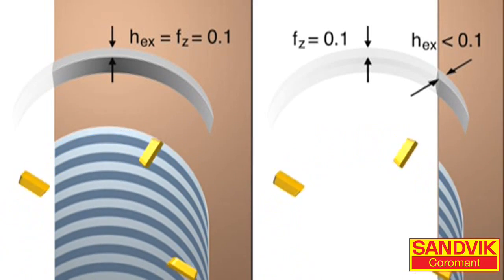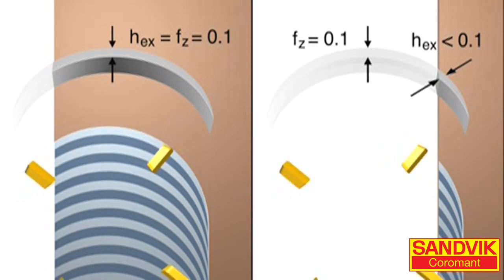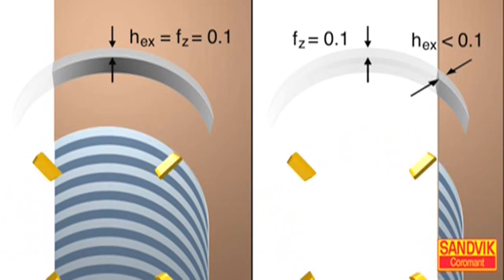On the left, we see the effects of a milling cutter under the recommended 70% engagement. Anytime the cutter is less than 50% engaged, chip thinning occurs and feed should be increased.